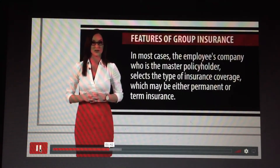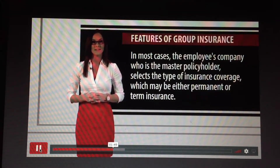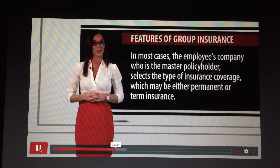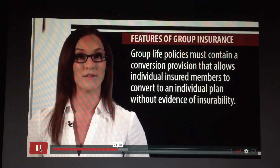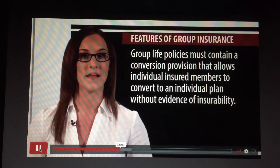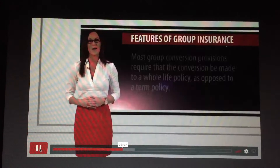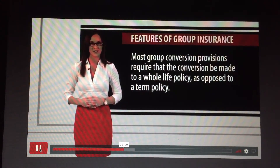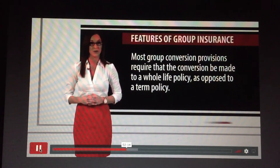Features of group insurance: in most cases, the employee's company, who is the master policyholder, selects the type of insurance coverage, which may be either permanent or term insurance. Group life policies must contain a conversion provision that allows individual insured members to convert to an individual plan without evidence of insurability. Most group conversion provisions require that the conversion be made to a whole life policy, as opposed to a term policy.